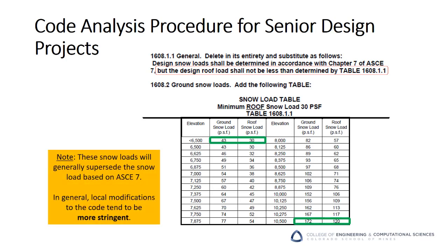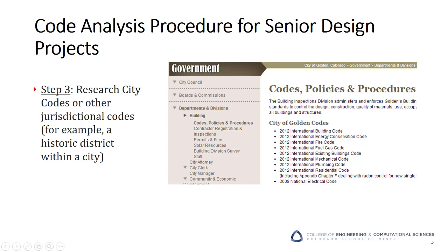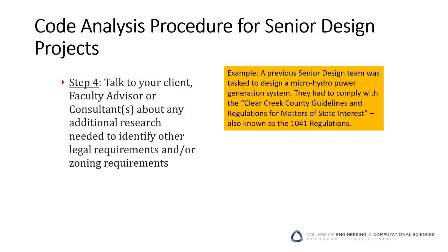In general, local modifications to the code tend to be more stringent than the IBC. The next step in our code analysis procedure is to research the codes at the city level. These are usually easily accessible on the city website. If you have a hard time finding them, don't be afraid to call the building department in the local city. Also, watch out for other jurisdictional codes you might run into at the city level, such as historic districts, which often have their own set of requirements. Once you've completed the previous steps, talk to your client, faculty advisor, or consultants about any additional research needed to identify other legal or zoning requirements.